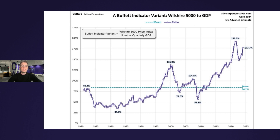This next chart provides a clearer alternative snapshot of the Buffett Indicator, but over a shorter timeframe. In this version, we use the Wilshire 5000 price index as the numerator in our ratio rather than the Fed's data used in the previous chart. Using our Wilshire variant, the latest Buffett Indicator reading is at 177.7%, an increase from the previous quarter and the sixth highest reading in the series.